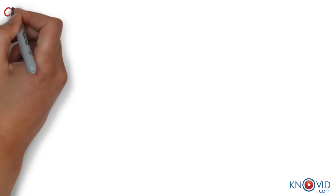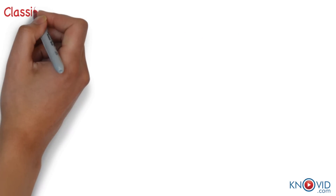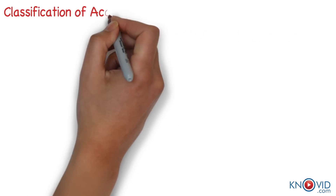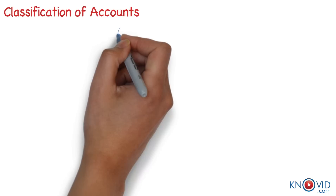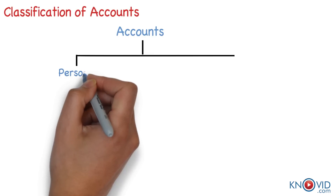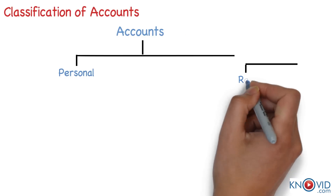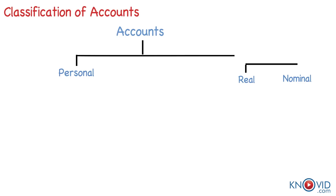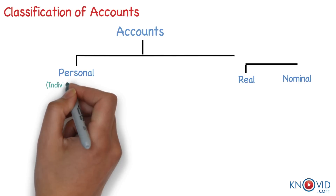As we saw briefly, classification of accounts in the traditional approach is based on three categories: personal accounts, real accounts, and nominal accounts.